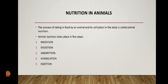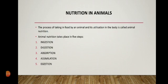Absorption is the process in which digested food passes through the intestinal wall into the bloodstream. Assimilation is the process in which absorbed food is taken in by the body cells and used for energy, growth, and repair. The final step, ejection, is the process in which undigested food is removed from the body. We will discuss each of these steps in more detail later.